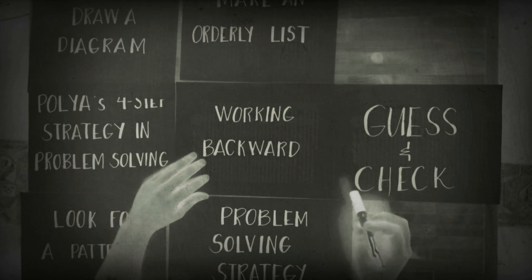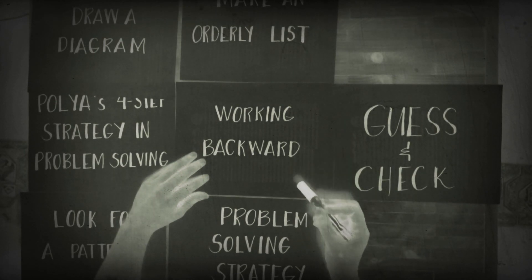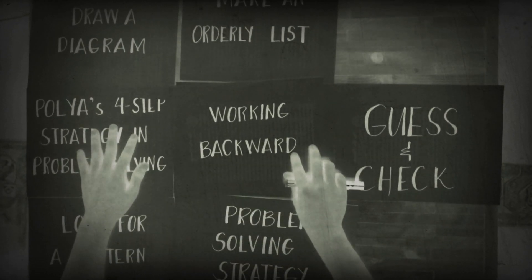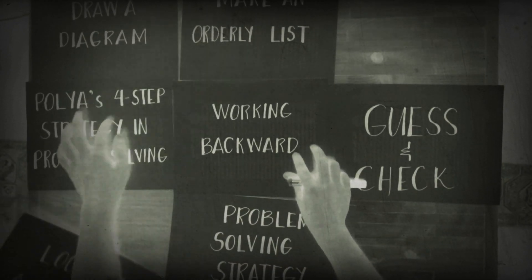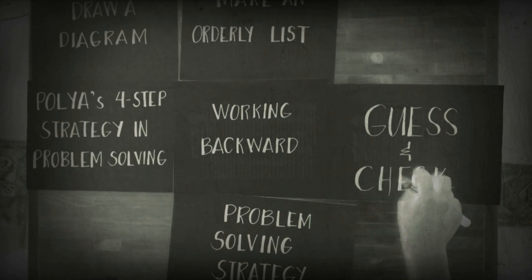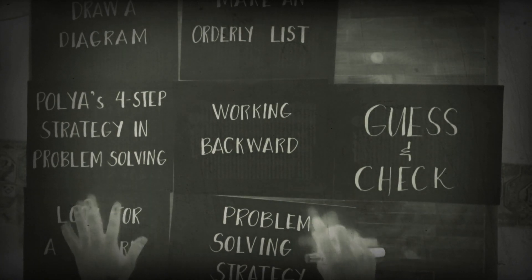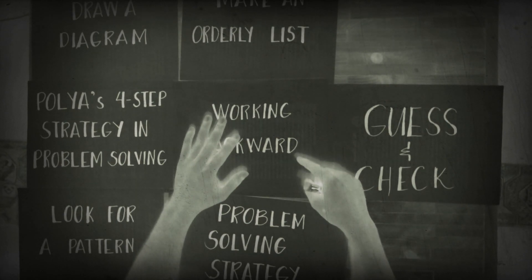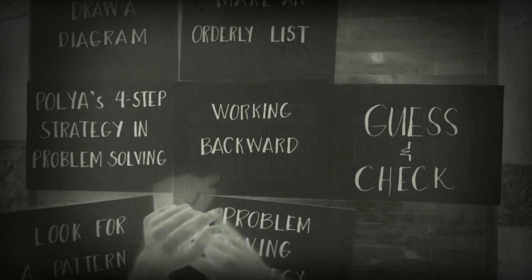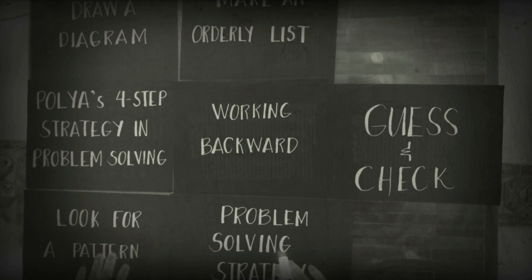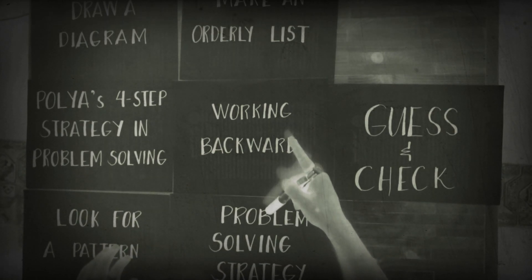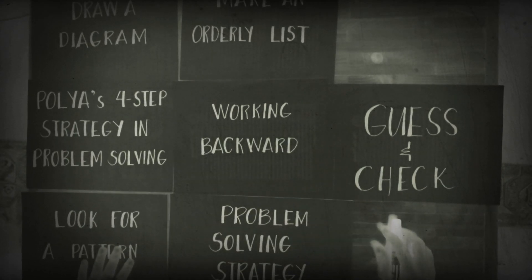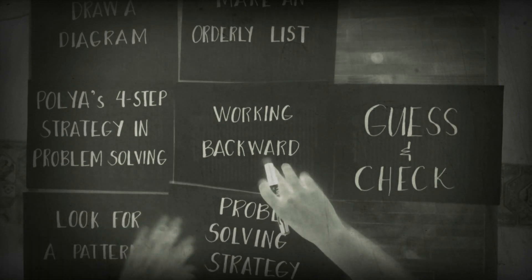Then we also have working backward. In this case to solve the problem you just have to work on the problem in the backward manner. We have six strategies in problem solving. We will focus on each strategy. I'll be giving one example each where we can apply the strategy.